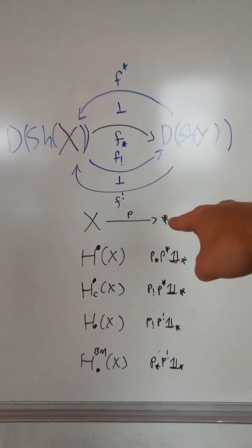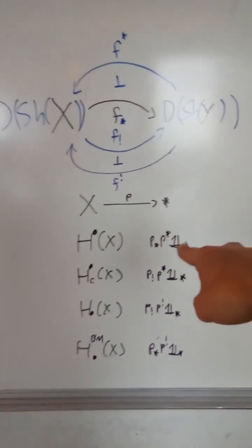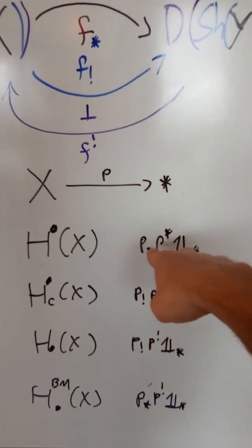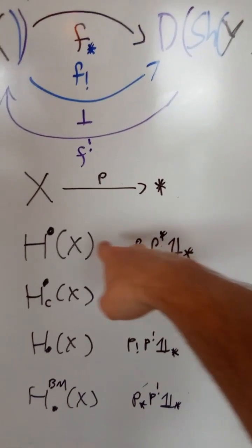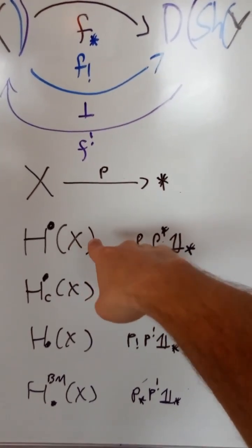If we take Y to be the one-point space and we let P be the unique map into that space, then if we take the constant sheaf on the one-point space, pull and then push, we recover a complex whose cohomology is just the ordinary cohomology of X.